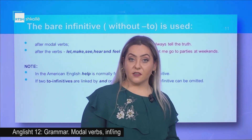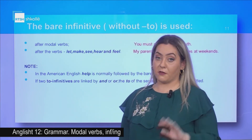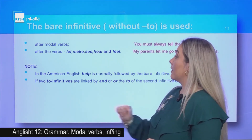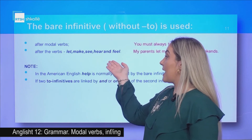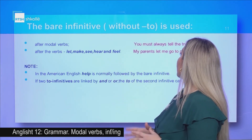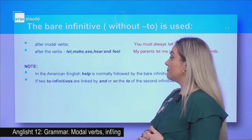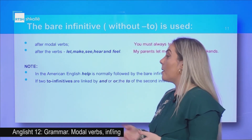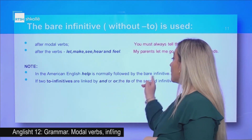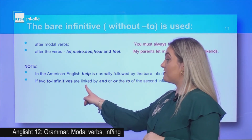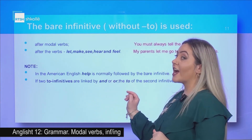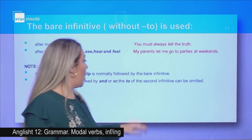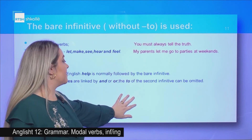The bare infinitive (infinitive without 'to') is used after modal verbs — example: you must always tell the truth. After verbs let, make, see, hear, and feel — example: my parents let me go to parties at weekends. Note: in American English, 'help' is normally followed by the bare infinitive. Also, if two to-infinitives are linked by conjunctions 'and' or 'or', the 'to' of the second can be omitted.